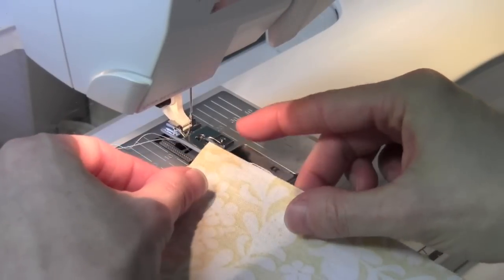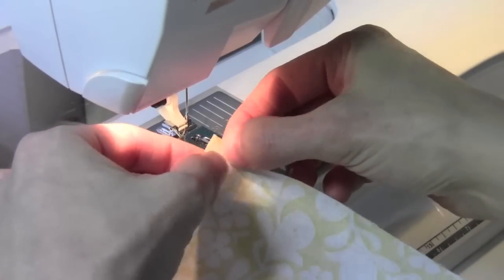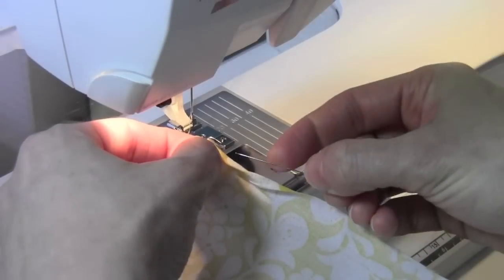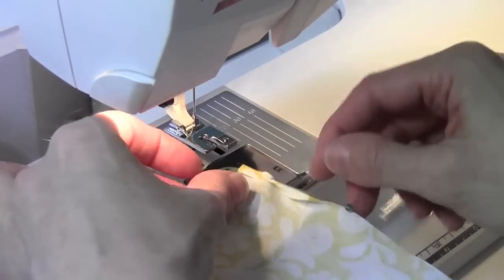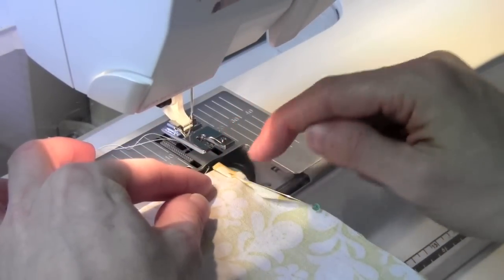To get the hem started, turn your fabric edge two times - once and twice, as small as your fingers can turn it. Then put a pin in there to hold it in place. As I put it underneath the foot and sink the needle down into that fold, it's going to keep it where it needs to be.